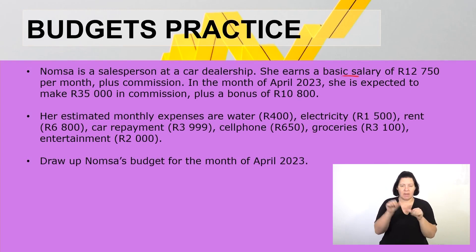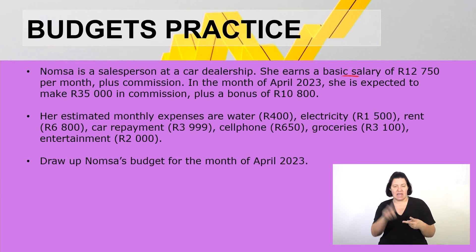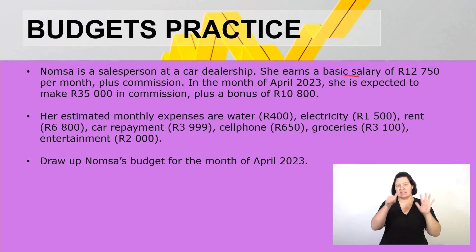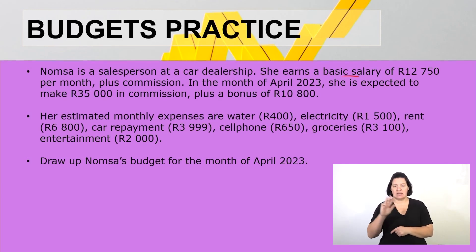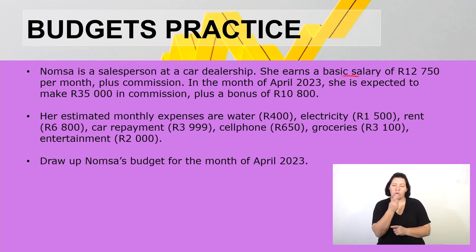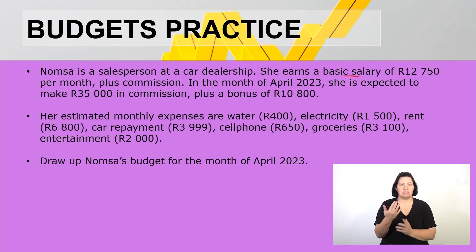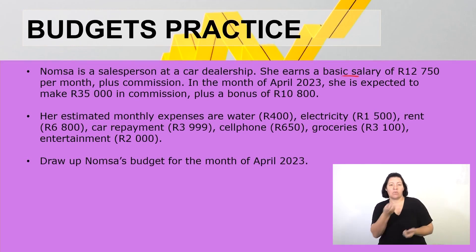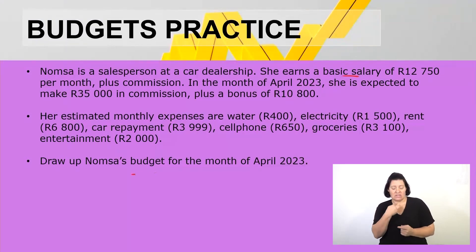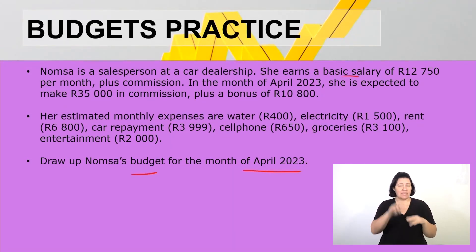Estimated monthly expenses are: water 400 rand, electricity 1,500 rand, rent of 6,800 rand, car repayment of 3,999 rand, cell phone 650 rand, groceries 3,100 rand, and entertainment of 2,000 rand. We need to draw up Nomsa's budget for the month of April 2023.